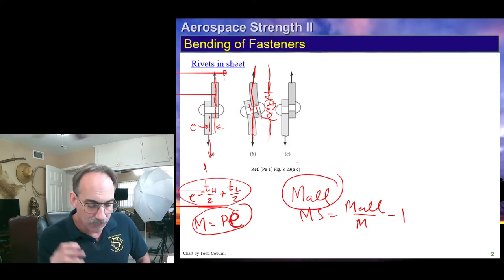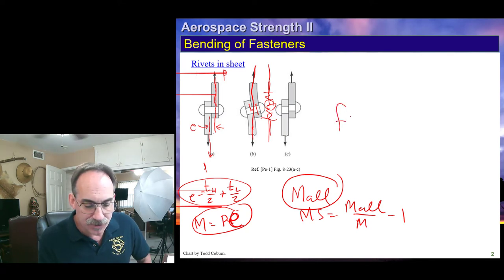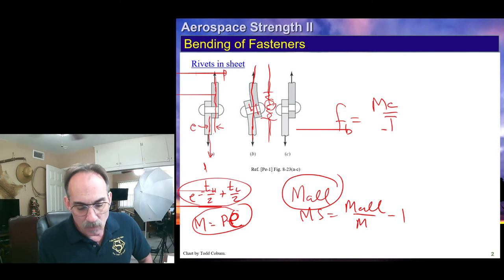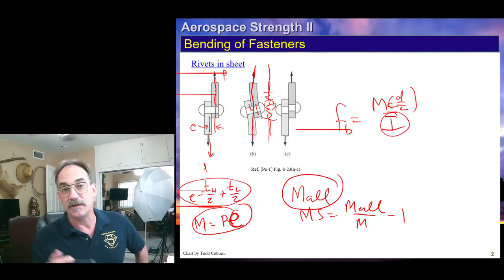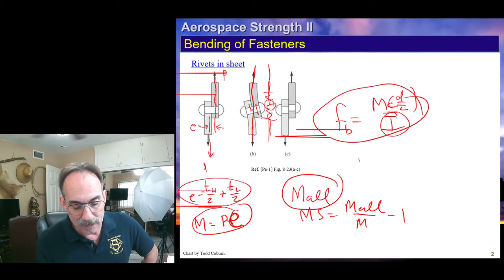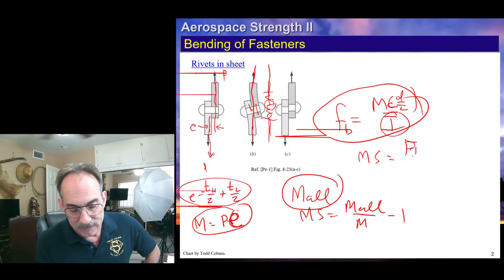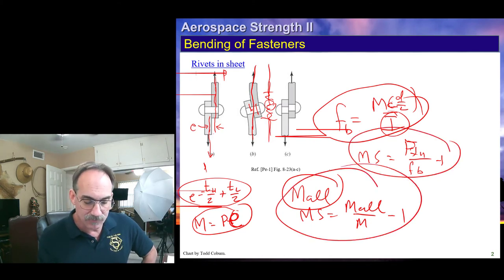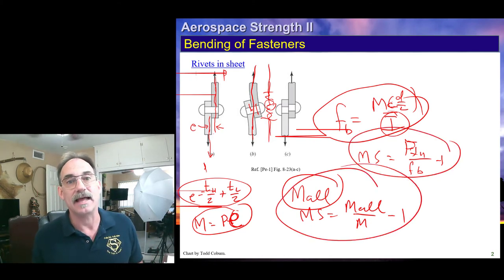Now, if you don't have a moment allowable for the bolt, no problem. You will then just calculate the bending stress on the bolt as MC over I, where C is just the diameter of the bolt over two, and I is the moment of inertia of the round shank area. Calculate the bending stress, and then your margin of safety would be your F-T-U of the bolt divided by your bending stress minus one. You can use either of these ways to evaluate that.